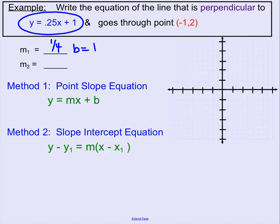We graph our y-intercept first, and then we'll graph our slope, rise 1 and run 4. And there is our blue line.